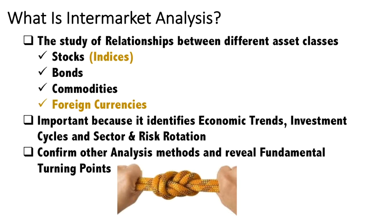So what is intermarket analysis? Well, this is really the relationship between different asset classes: stocks, indices, bonds, commodities, and foreign currencies. The movement of stocks, bonds, and commodities do affect foreign currencies. If you're good at looking at charts to predict the direction of currencies, you could even be looking at the stock indices because they move in tandem — especially the pairs that are highly correlated to the movement in stock markets.